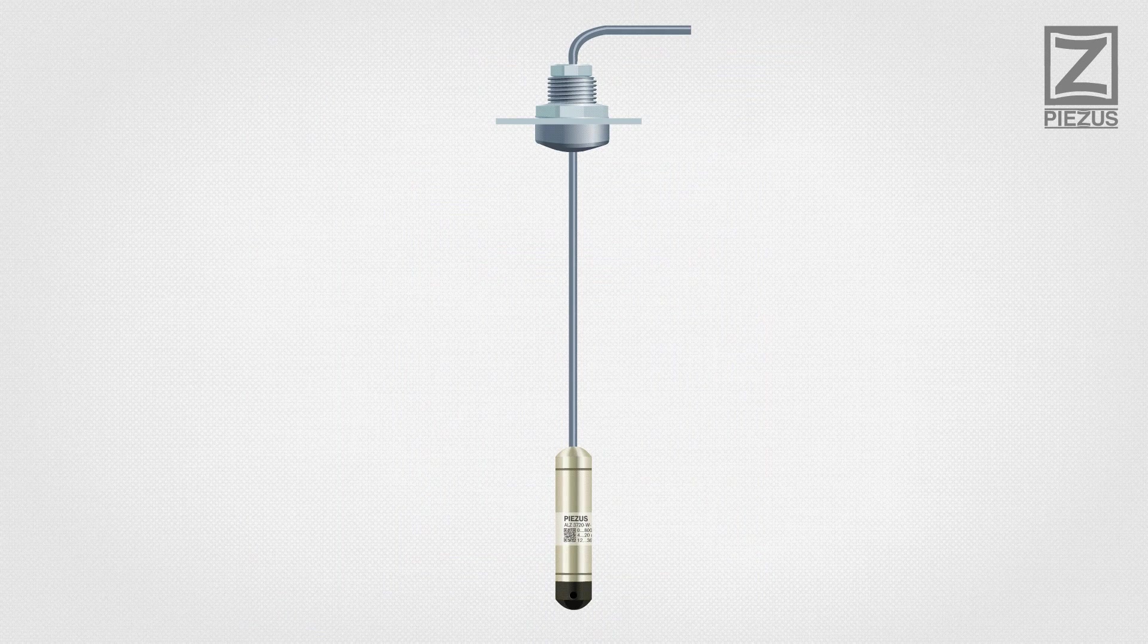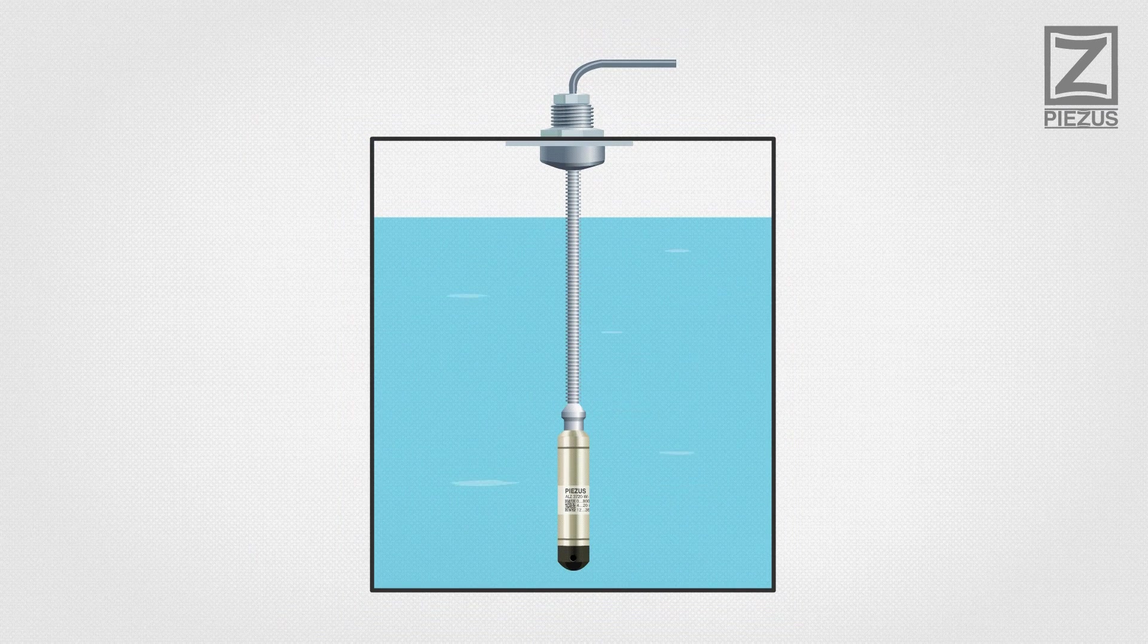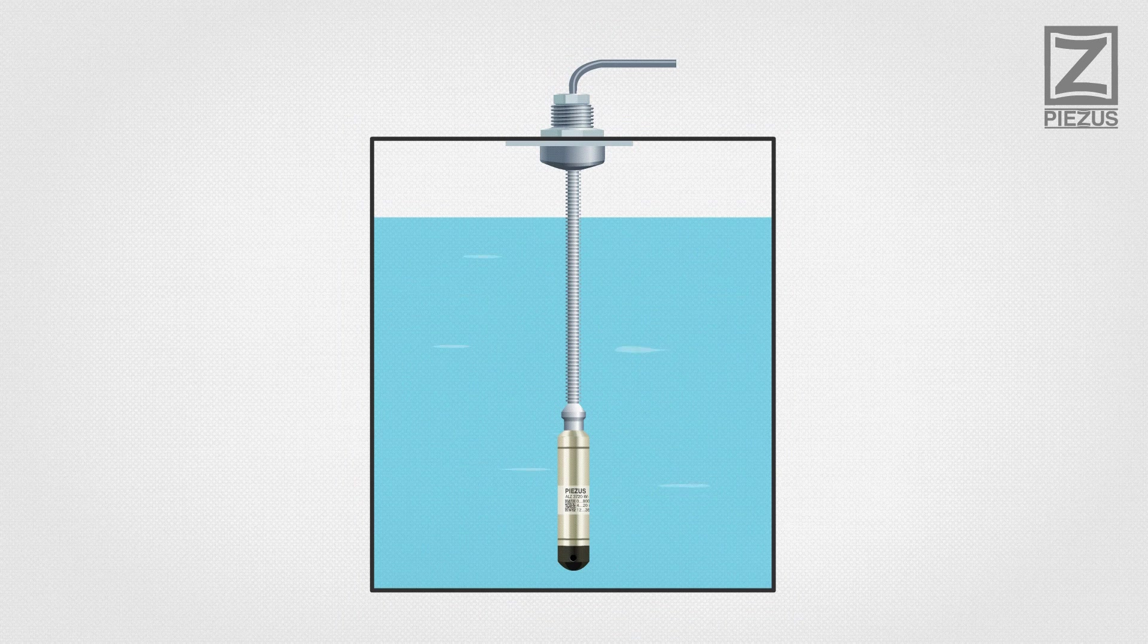Optionally, transmitter cable can be contained in a corrugated stainless steel tube. It serves to protect the cable from mechanical damage.